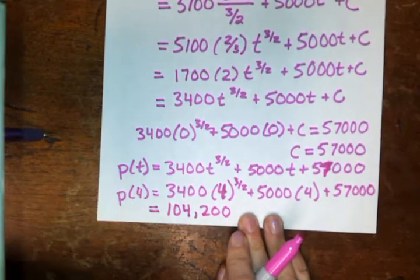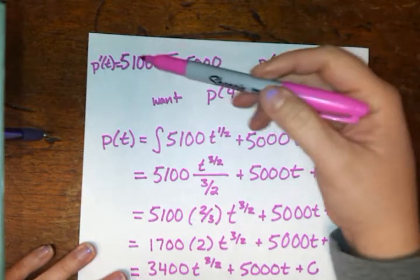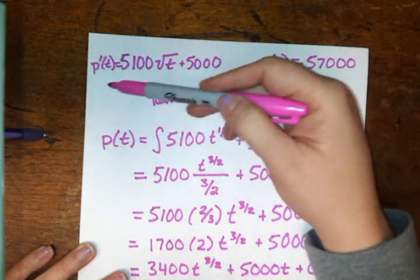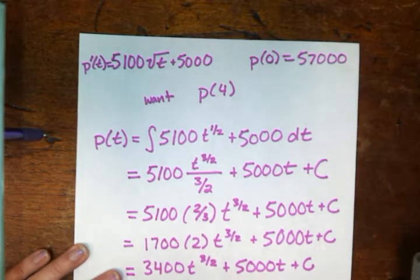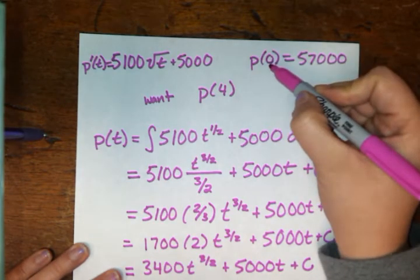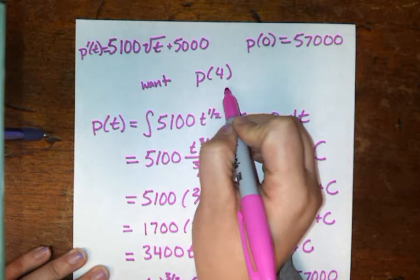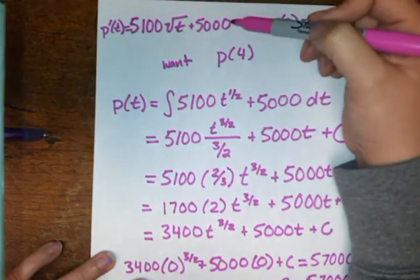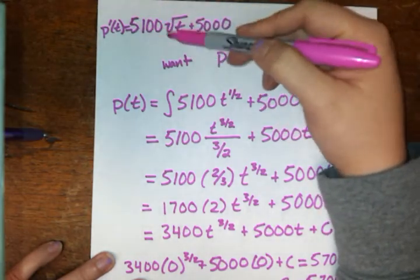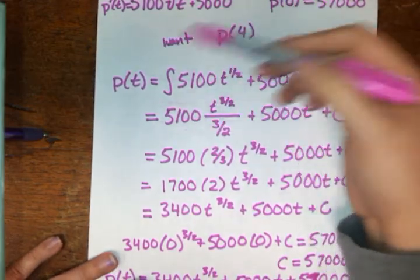So let's walk through this one again. This is complicated enough that it bears another walkthrough. So they gave us a rate at the beginning that we realized, because we know what code words for derivatives are, that this rate of change was just the derivative function for our population function. So it was p prime of t equals what they gave us here. They also told us that population before construction started was 57,000. What they wanted us to find is what the population was four years after construction started.